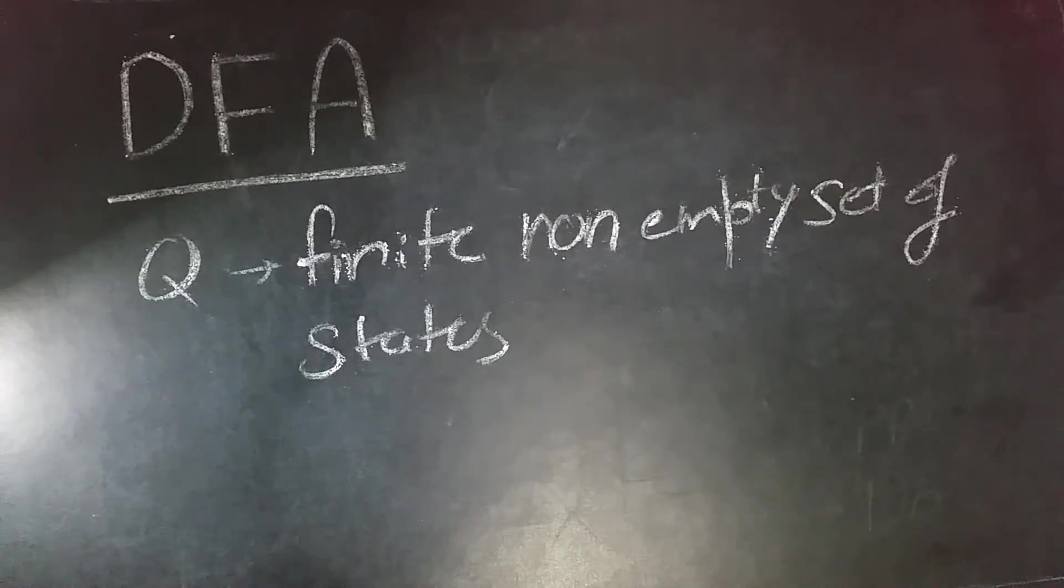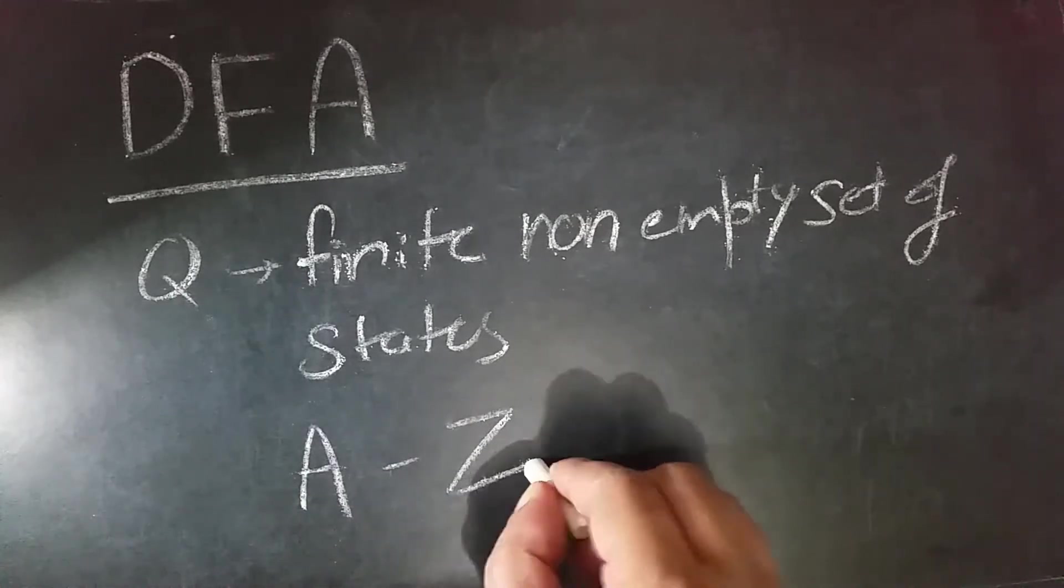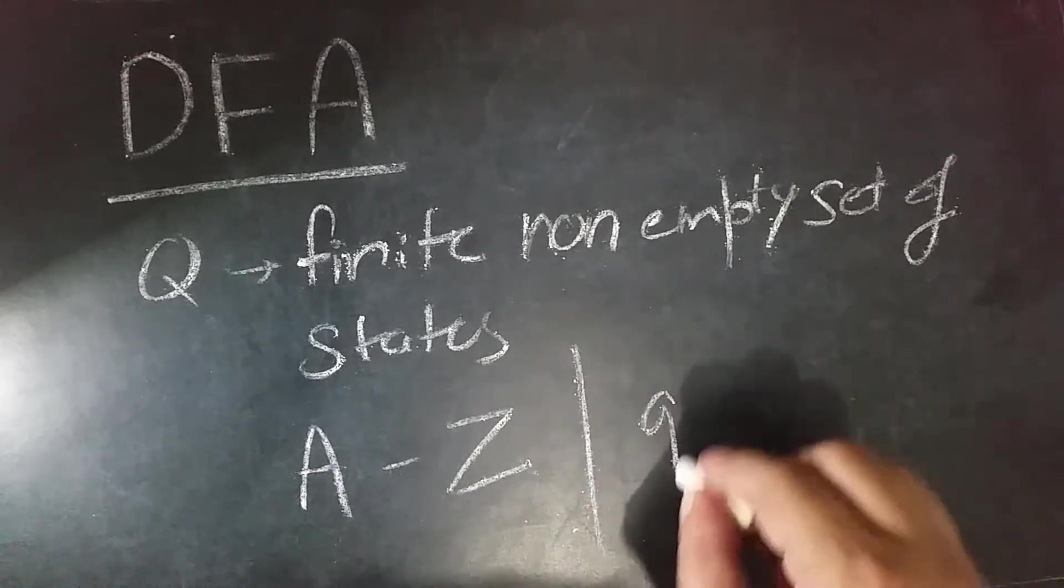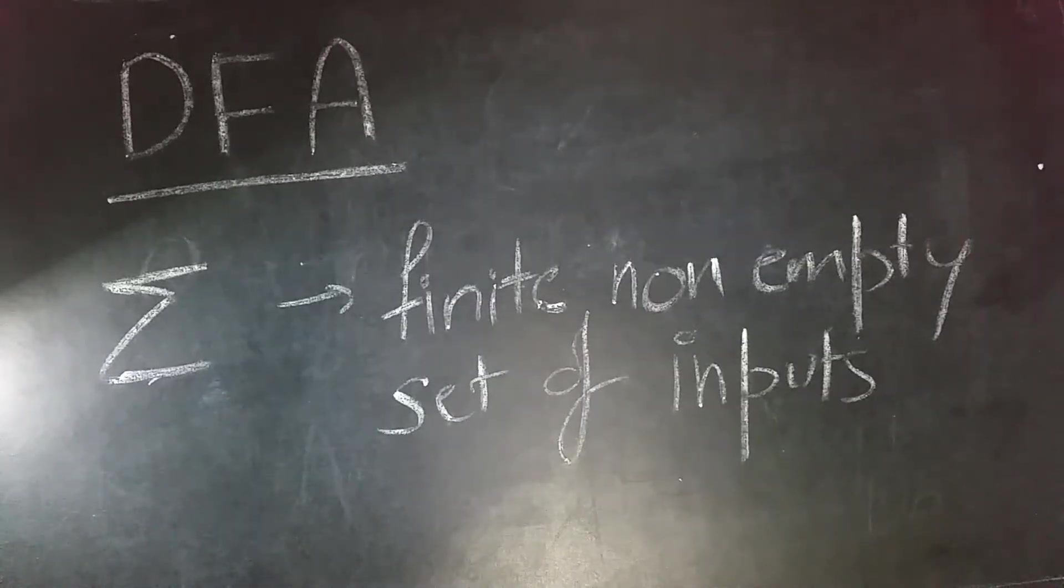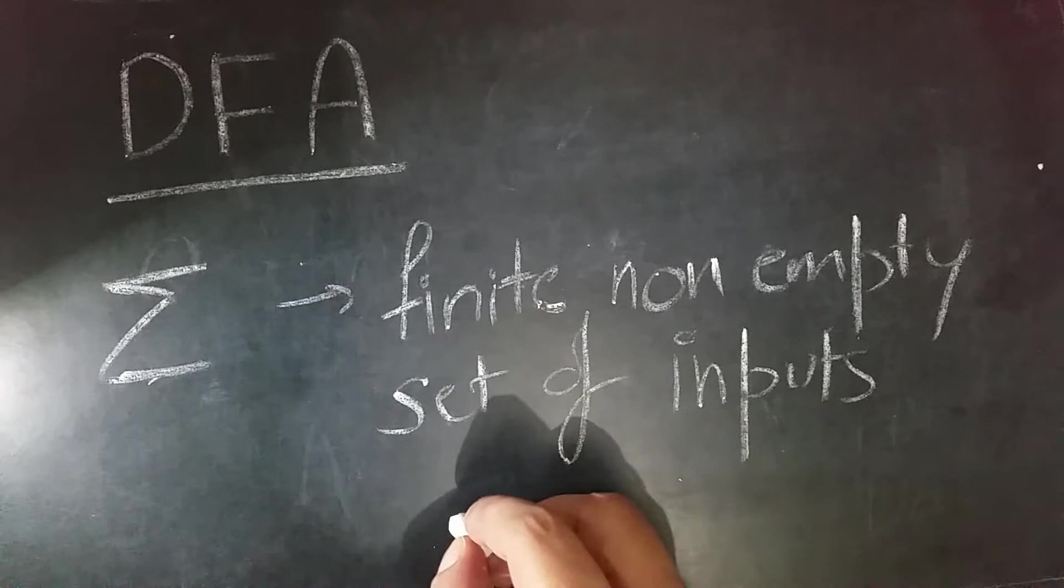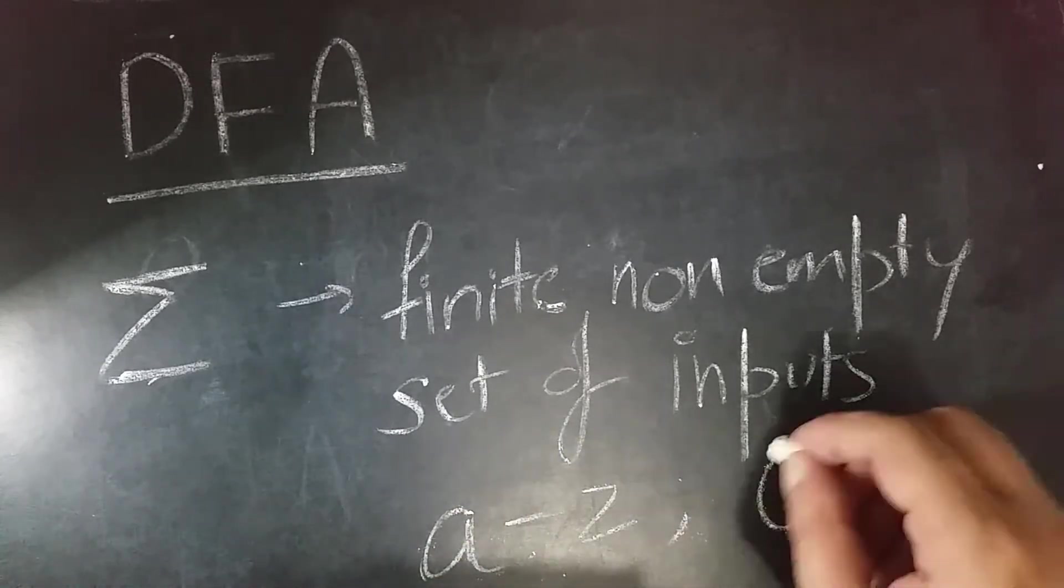Deterministic finite automata can be represented by five tuples. First is Q, which represents a finite non-empty set of states, generally denoted by capital letters A to Z or Q0, Q1. Second is Sigma, which is a finite non-empty set of inputs, generally denoted by small letters a to z or with numbers